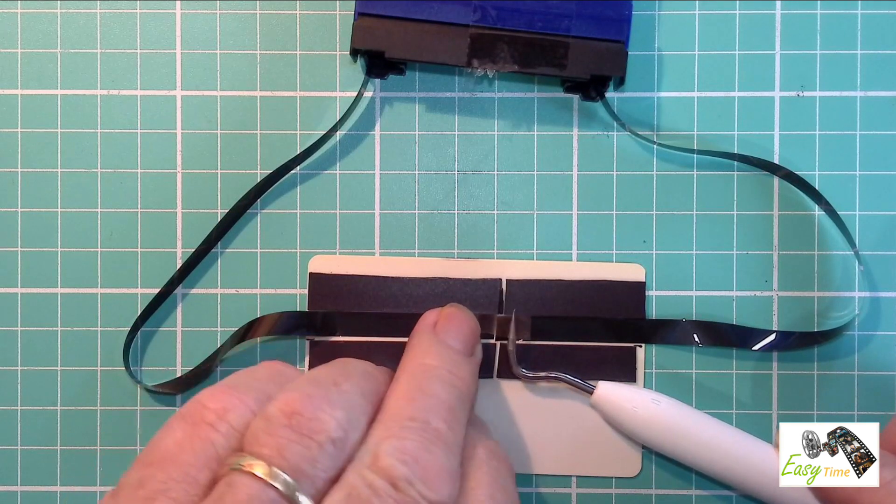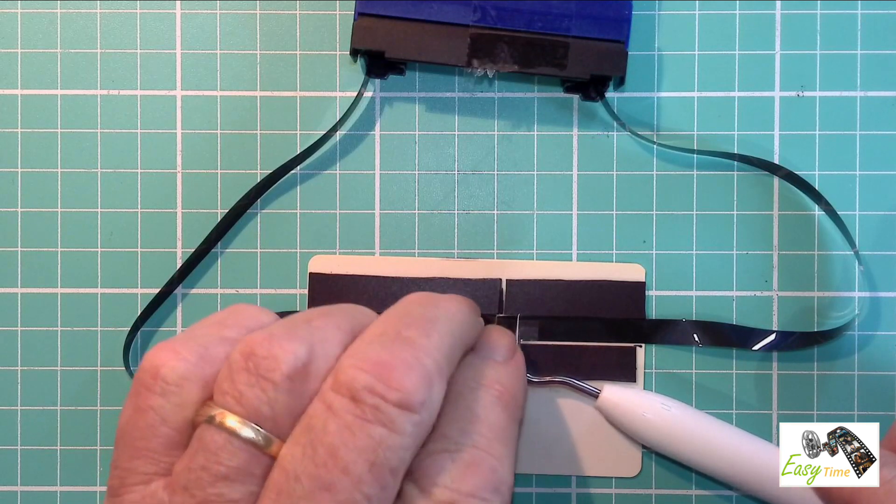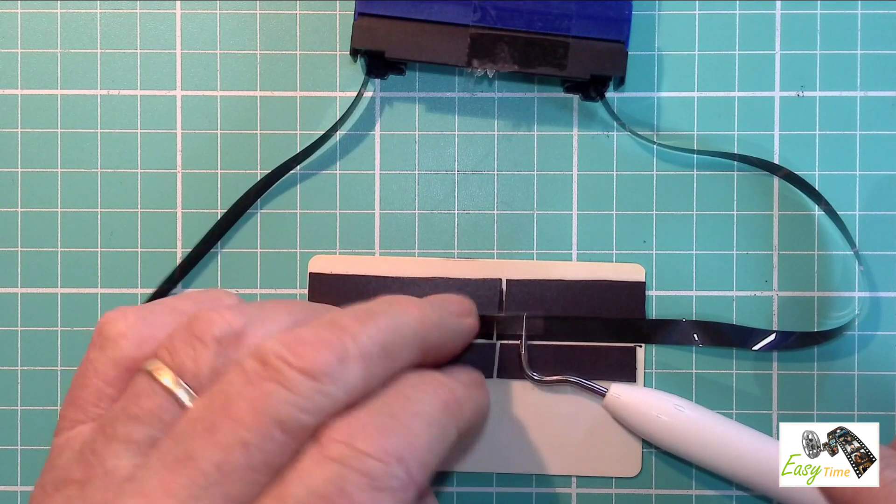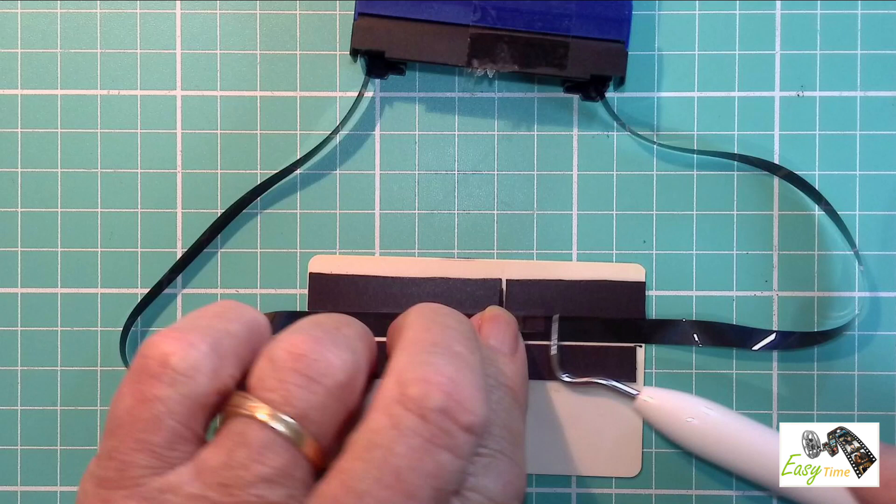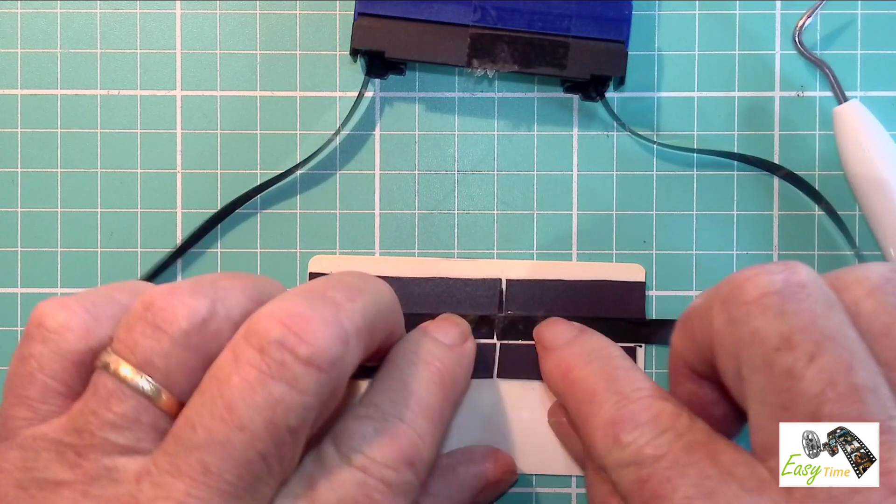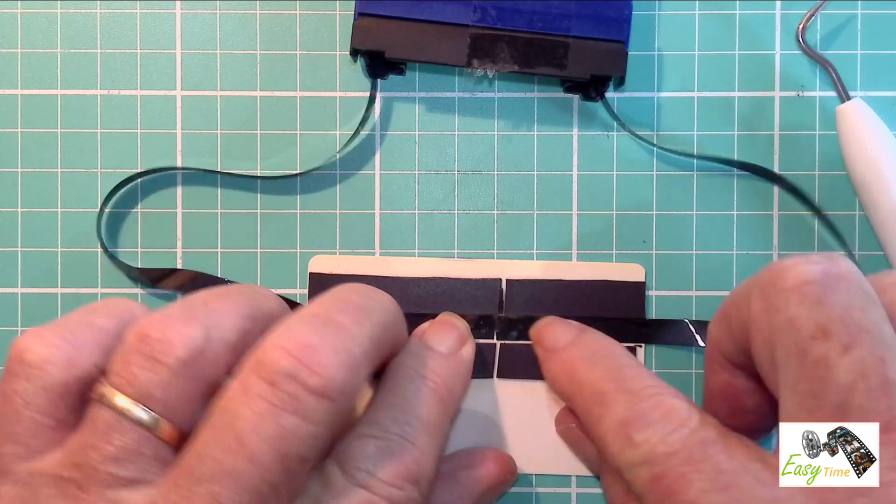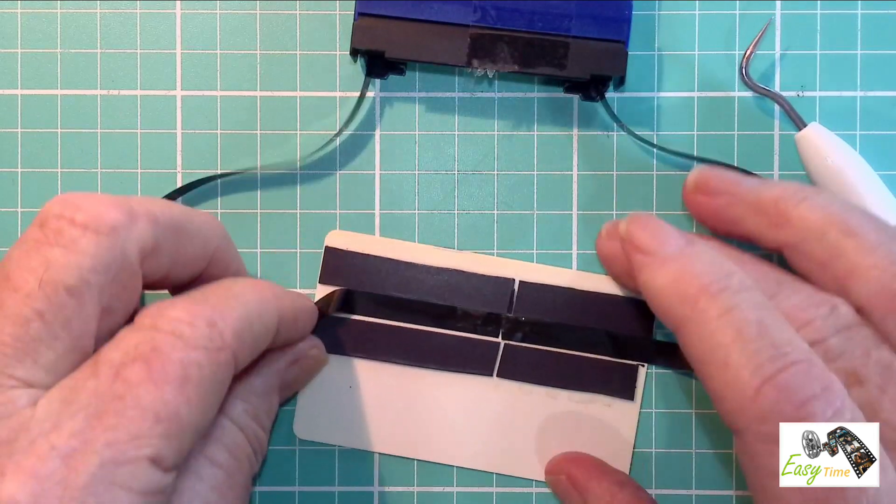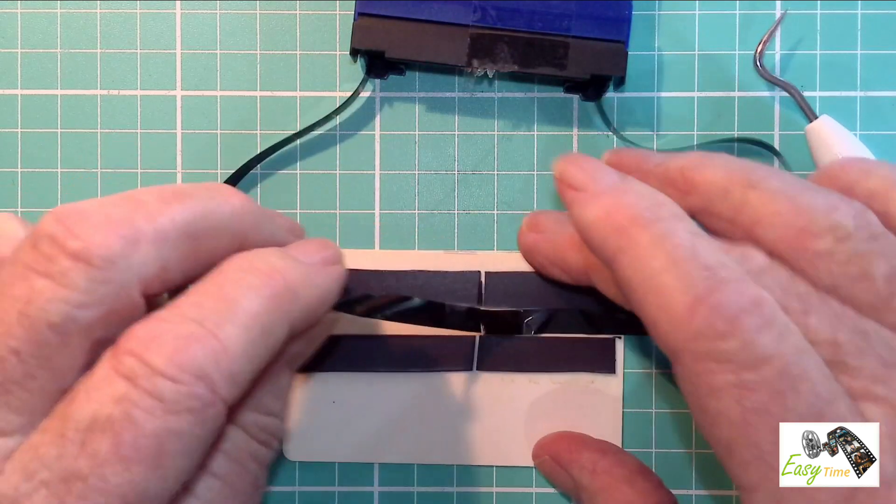Once both sides of the tape are aligned correctly, I then use a piece of sticky tape to adhere them together. Make sure that you have the back of the tape facing upwards as this is the side you want to put the tape on.